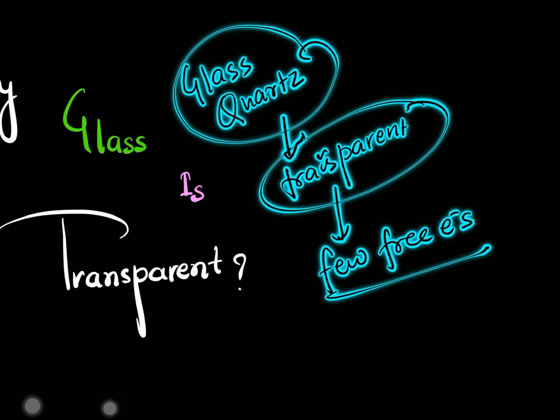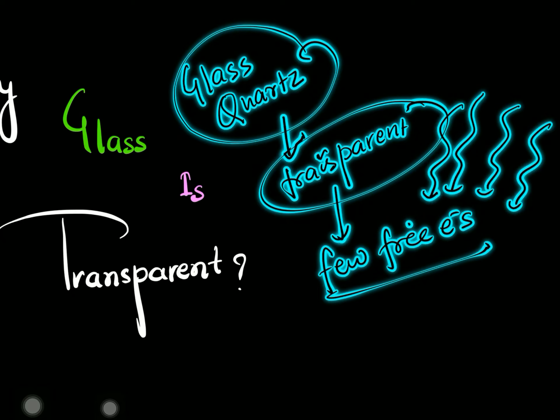The number of free electrons is very low, and due to that, when light comes, the photons will not interact much and will pass through. Due to that reason, they will be mostly transparent.